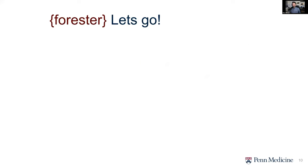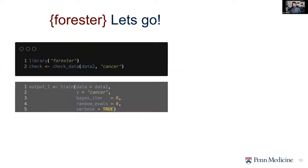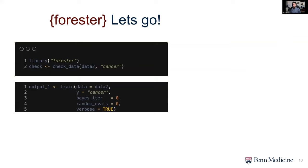First thing you want to do is a little bit of a data check. There's a great check_data function built right into Forrester. If you've done any machine learning before, you know that typically you start with an exhausting exploratory data analysis — writing scripts, looking for correlations, removing things that overfit. It takes a long time. Forrester has this built in, which is pretty fantastic.